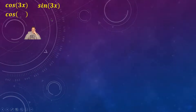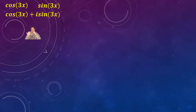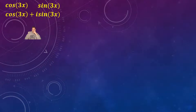First, I'm going to write this as cosine 3x plus i sine 3x, because that is the complex number form, and that form contains both the cosine 3x and the sine 3x, so it's already useful. Next I'm going to write this in exponential notation — it's going to look like e to the i·3x.